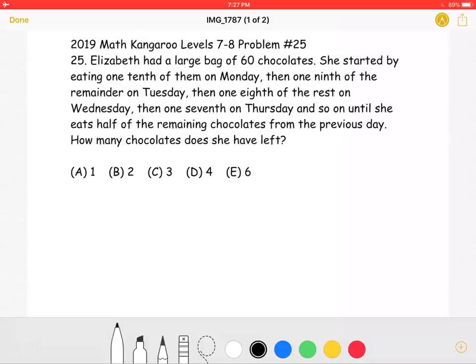Elizabeth had a large bag of 60 chocolates. She started by eating one-tenth of them on Monday, then one-ninth of the remainder on Tuesday, then one-eighth of the rest on Wednesday, then one-seventh on Thursday, and so on until she eats half of the remaining chocolates from the previous day. How many chocolates does she have left?